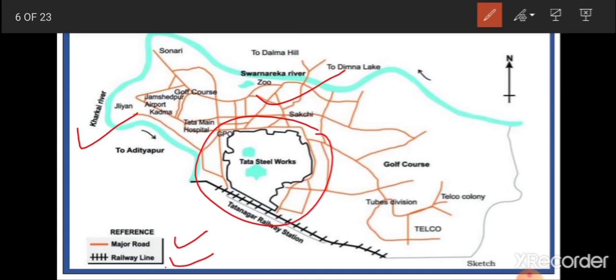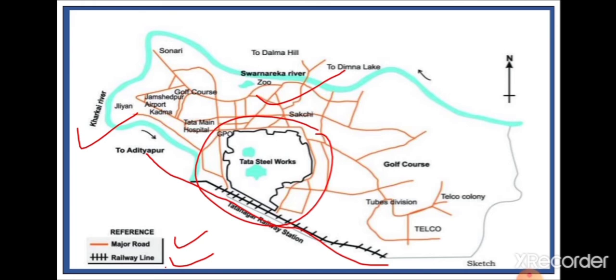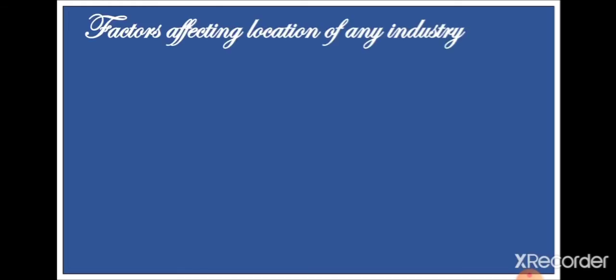You can use the map key to identify the orange lines marking the roadway network, and here you can see Tata Nagar railway station, which indicates the railway line. So this area has a dense network of roadways as well as railway facilities. I hope all of you understand the location of TISCO — it is located in Sakchi, in Singhbhum district of Jharkhand. Now let us move to the factors that affect the location of any industry.